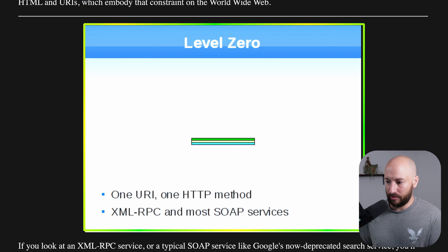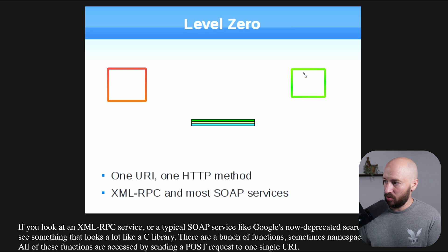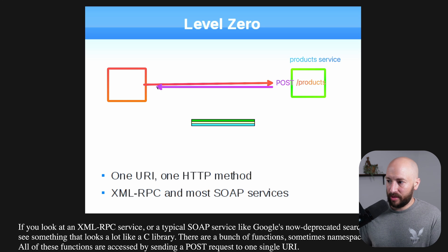First, there's Level 0. Level 0 says you have only one URI and one HTTP method, and this is how you interact between the client and the server. Basically, you have the product service, and you have a POST endpoint in which you interact only with this endpoint, and the message itself will contain what you actually want to do.